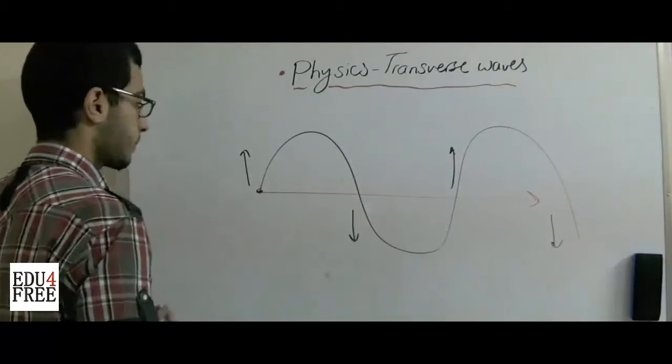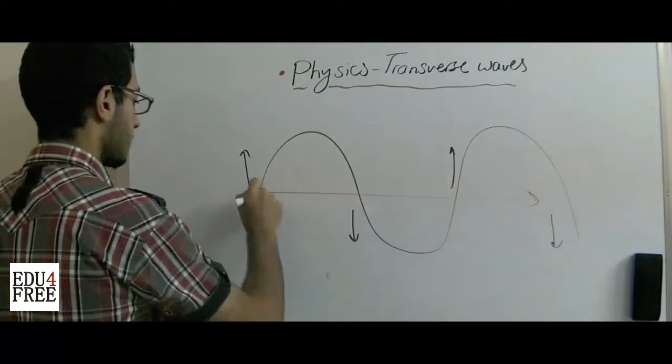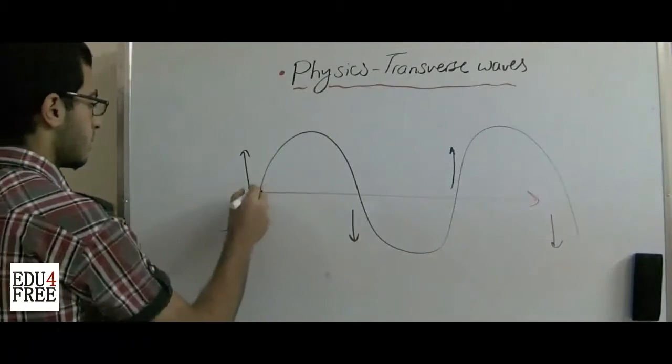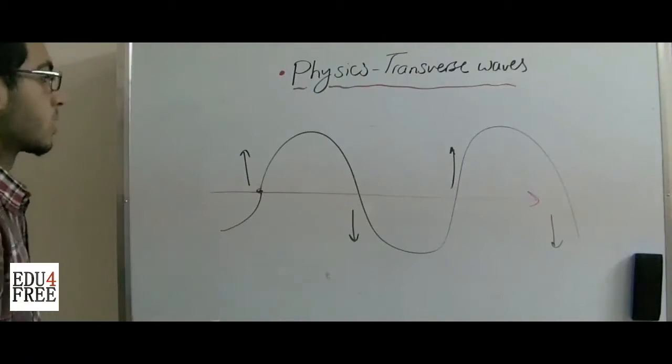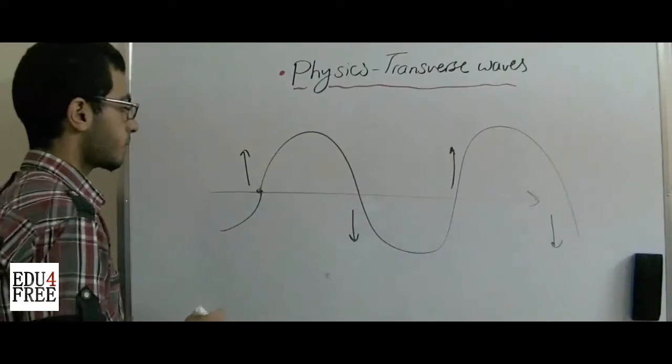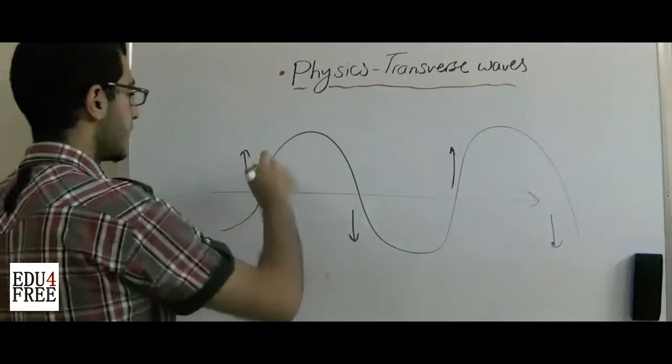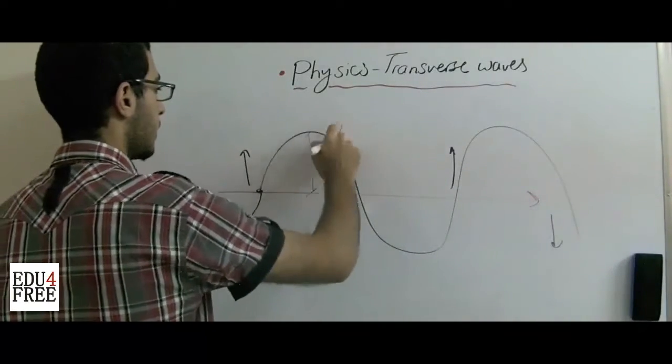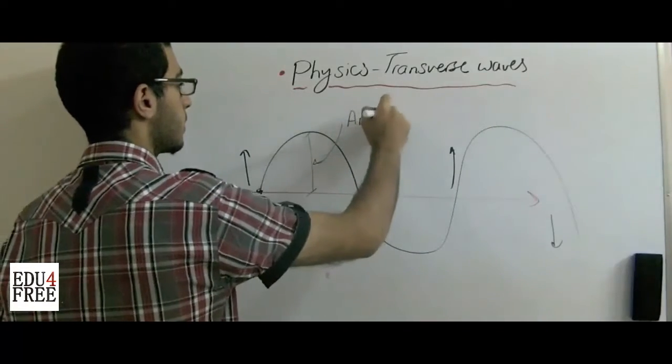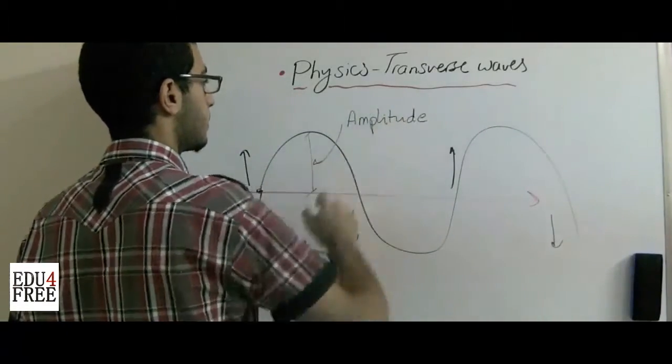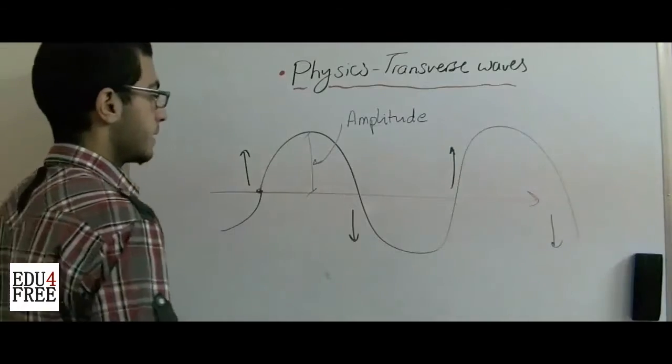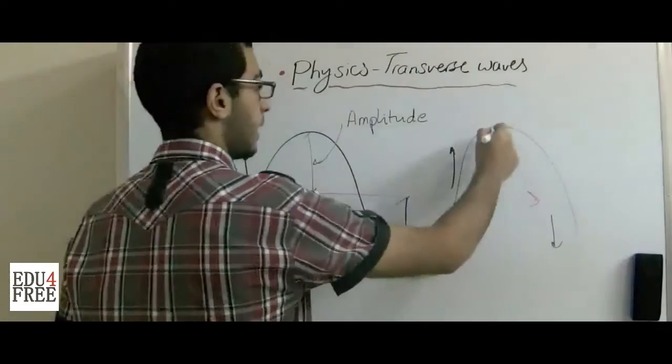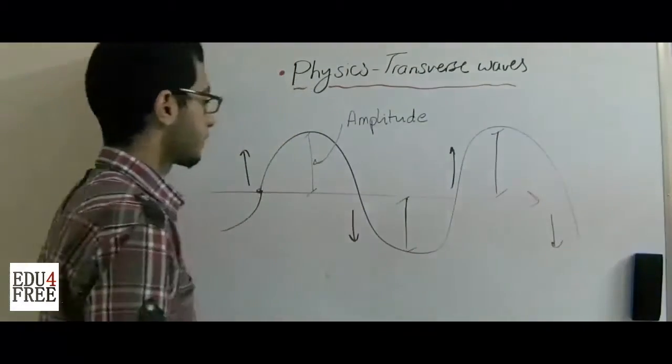We may draw it like that. When the body goes upwards it makes an amplitude. So this is an amplitude. And also this is an equal amplitude. And there is another amplitude.